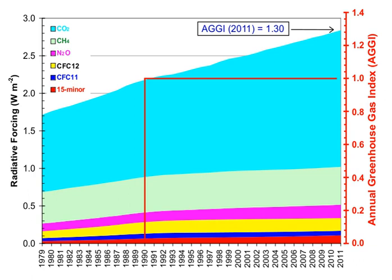A wide range of projections of future emissions have been produced. Rogner et al. concluded that unless energy policies changed substantially, the world would continue to depend on fossil fuels until 2025–2030. Projections suggest that more than 80% of the world's energy will come from fossil fuels. Projected annual energy-related CO2 emissions in 2030 were 40 to 110% higher than in 2000, with two-thirds of the increase originating in developing countries.